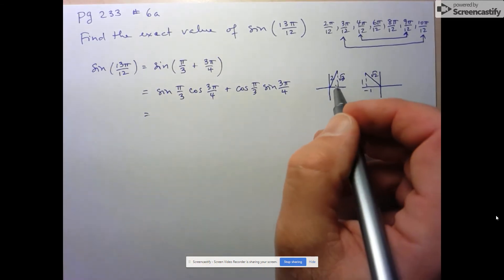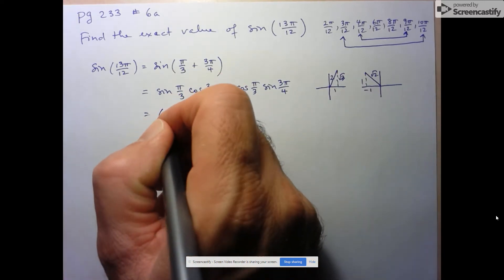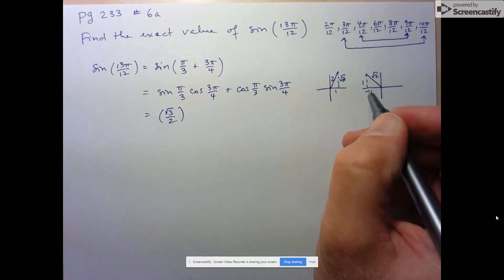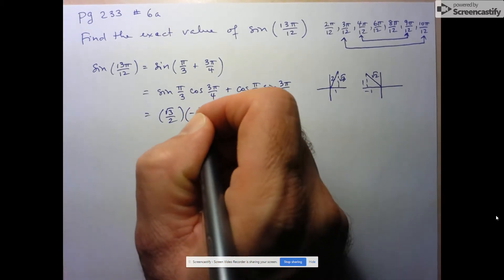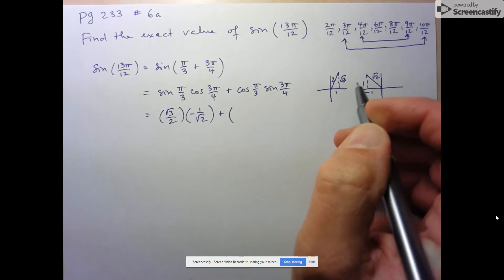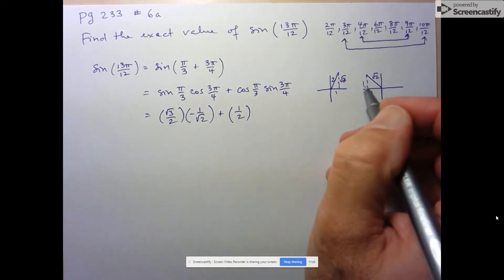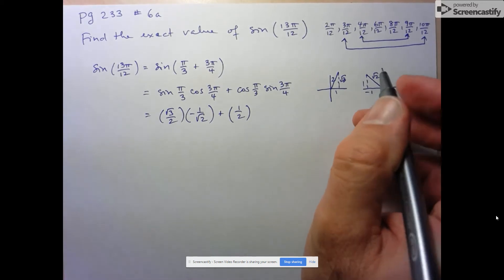Now I can just read off these trig ratios from my diagrams. Sine of π over 3 is just root 3 over 2. Cos of 3π over 4 is just negative 1 over root 2. Cos of π over 3 is 1 over 2. And then sine of 3π over 4 is just 1 over root 2.